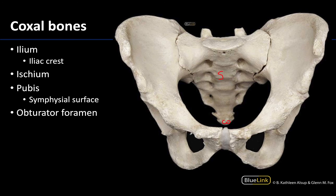The coxal bones are the dominant structures and, as you hopefully recall, the coxal bones are divided into three main parts that were separate during development but eventually fuse. We still describe them based on where they were located. The ilium is the more superior portion and also the largest portion of the coxal bone.